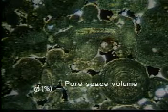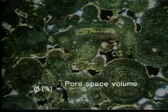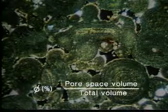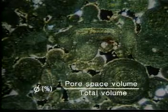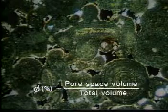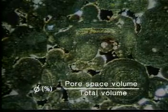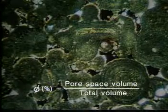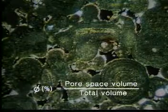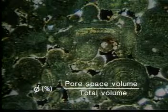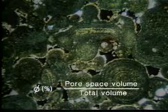Porosity, as indicated here by the symbol phi, is signified by a percentage and represents the volume of pore space divided by the total volume of the rock. Therefore, a rock with 12% porosity has 12% of its volume made up of void spaces.